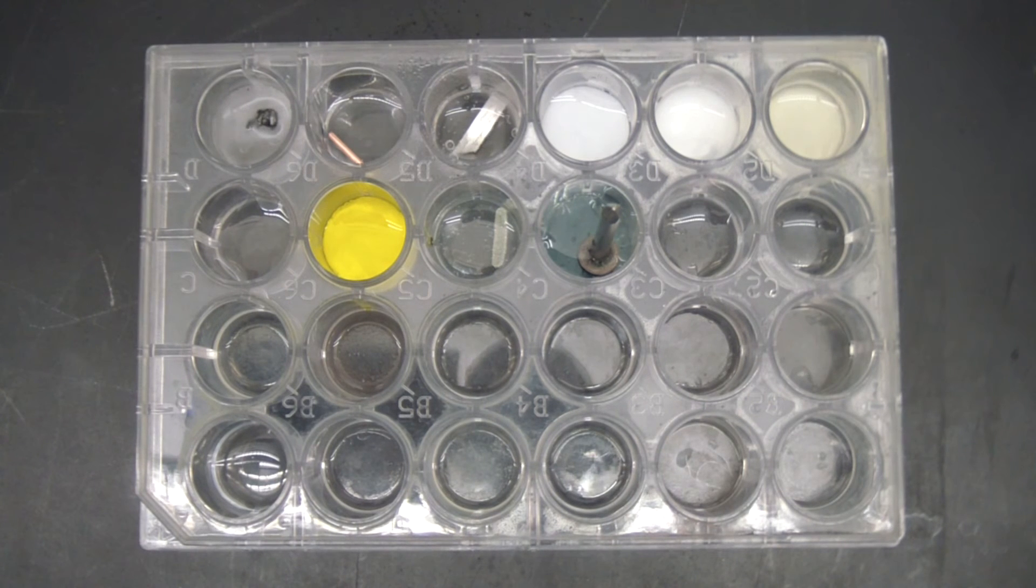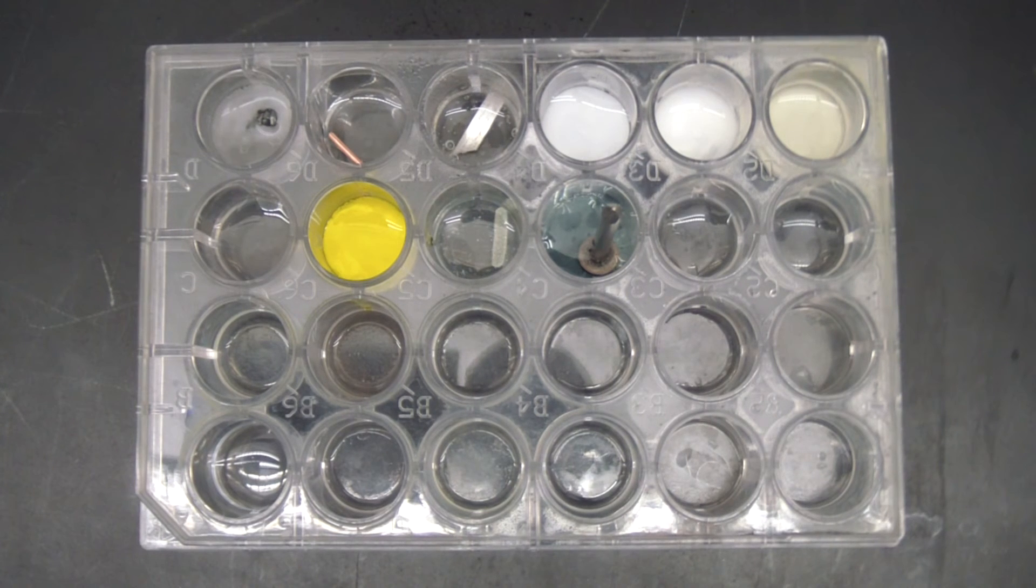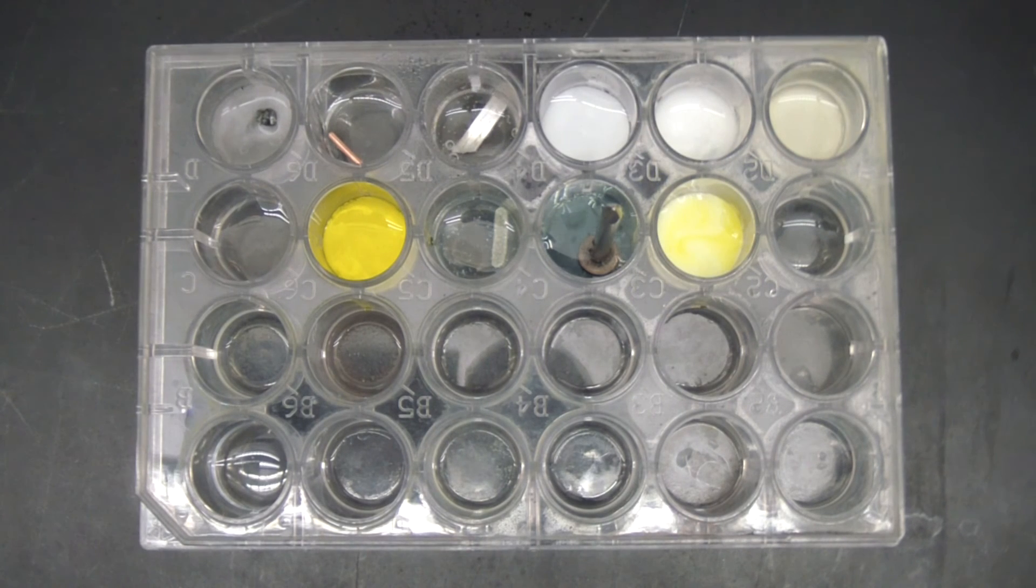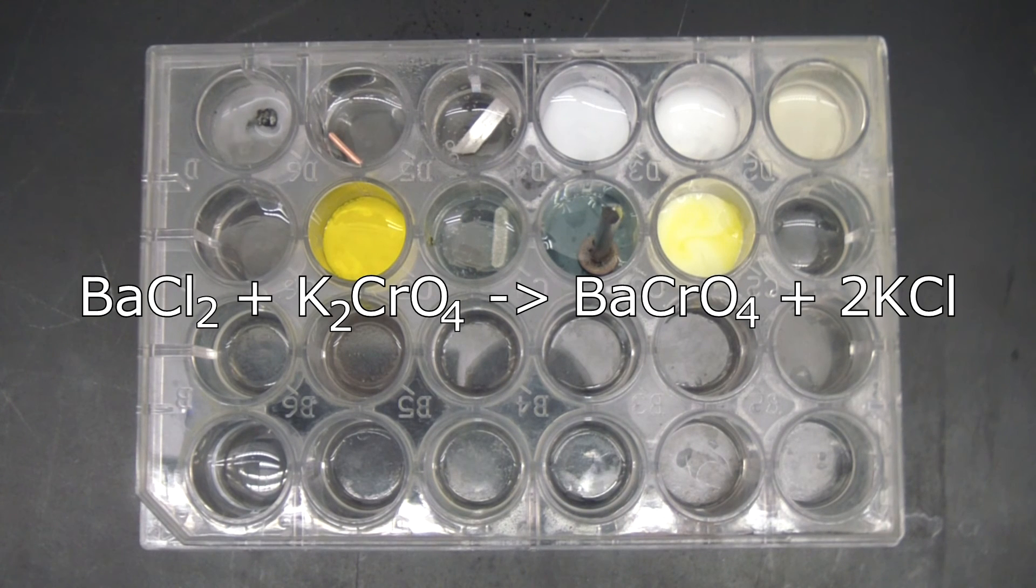All right, so in the next one, some barium chloride is already in that well. And to that, I'm going to add some potassium chromate. We'll throw that in. And you can see we get a kind of a milky yellow precipitate right there, which follows this equation.